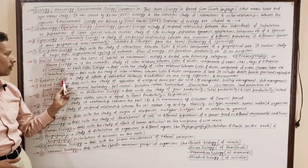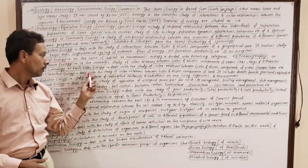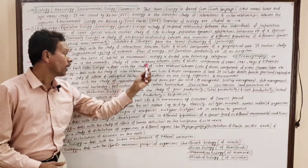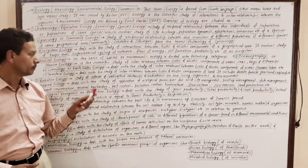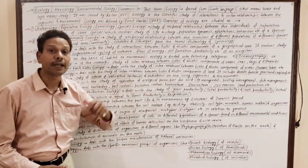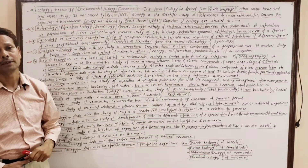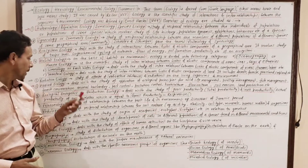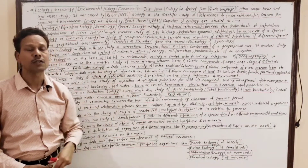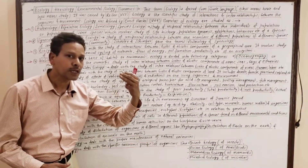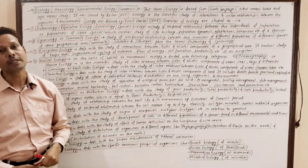The next branch is radiation ecology. This branch deals with the study of the effects of radioactive substances and radiations on living organisms and the environment.